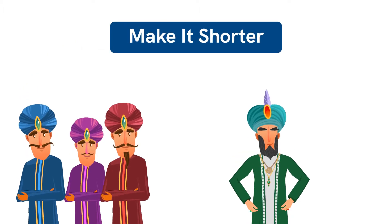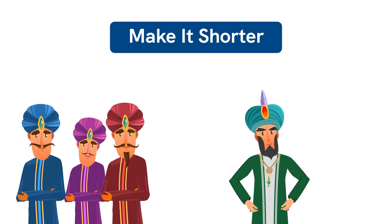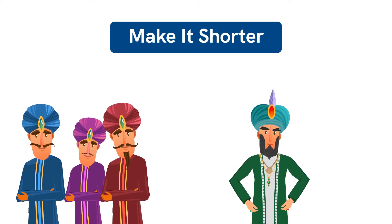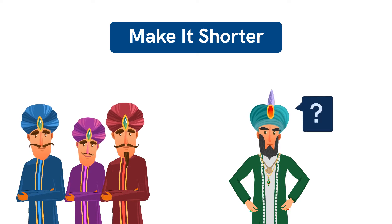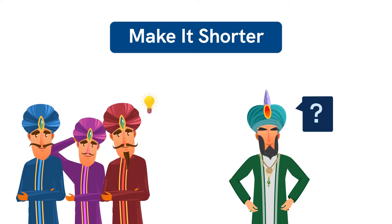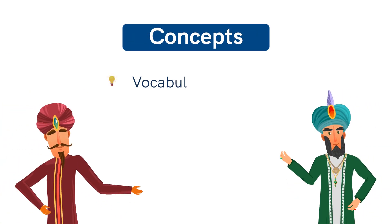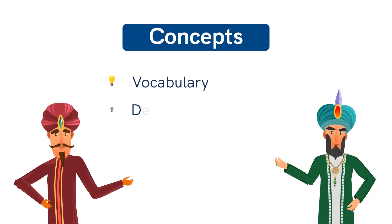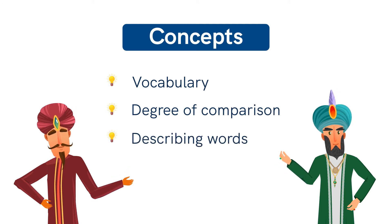The lesson 'Make it shorter' is one such story which narrates the story when King Akbar decided to check out the intelligence of his ministers. The story incorporates the concepts of vocabulary, degree of comparison, and describing words.